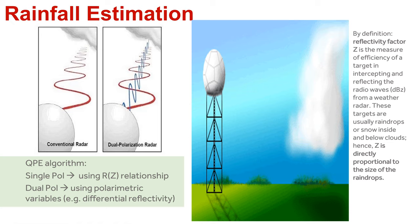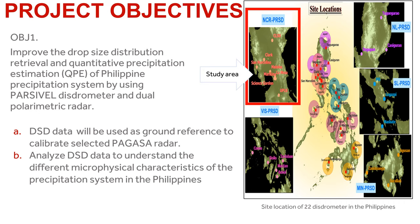On the other hand, for dual polarization radar, dual polarimetric variables are used to estimate rain rate. Studies suggest that QPE based on dual polarization has shown improvement compared to ZR relations. In our project, one of the objectives is to improve the drop size distribution retrieval and QPE using distrometers and dual polarimetric data.